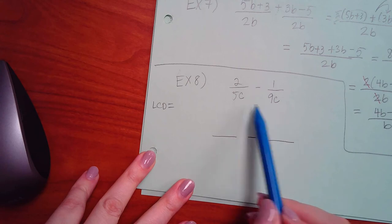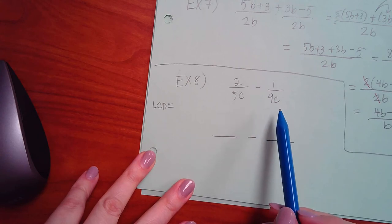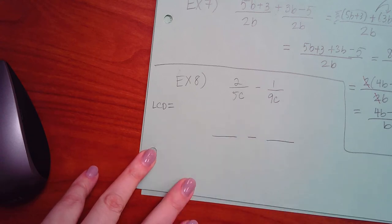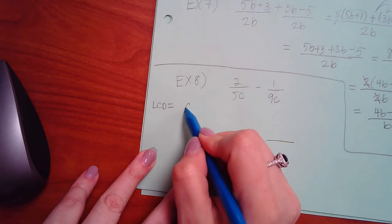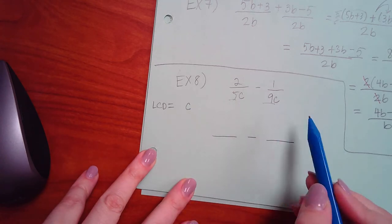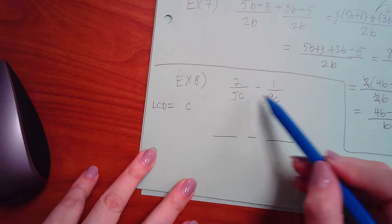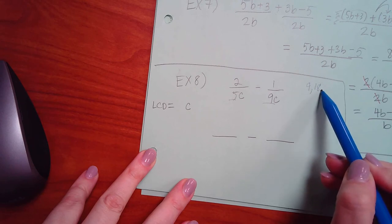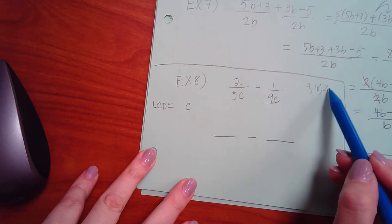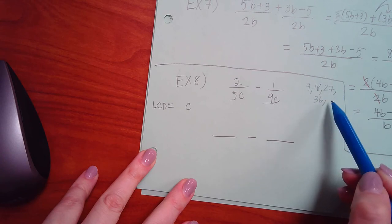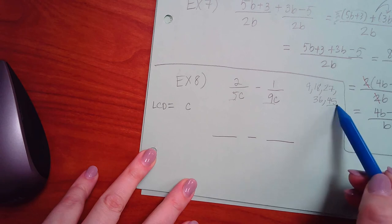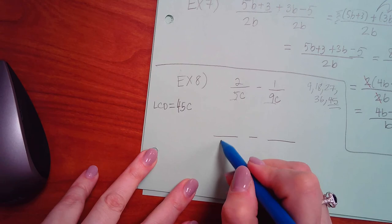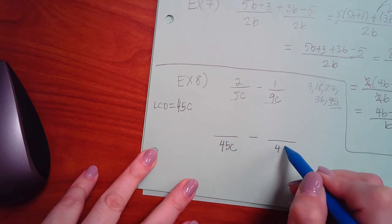Do they have anything the same? 5C and 9C, do they have anything in common? The C. And then between the numbers, remember the strategy? Go with the big one first. Can 5 go into 9 evenly? No. So we start listing its multiples. Can 5 go in 18? Nope. What about 27? Or 36? Or 45? 45, yes. So my LCD is going to be 45C, which means I need to have 45C downstairs for both.